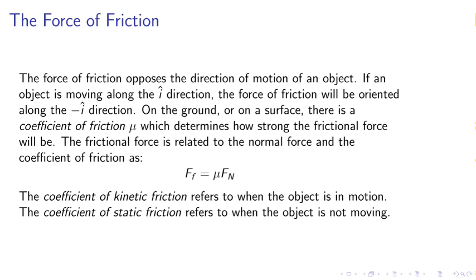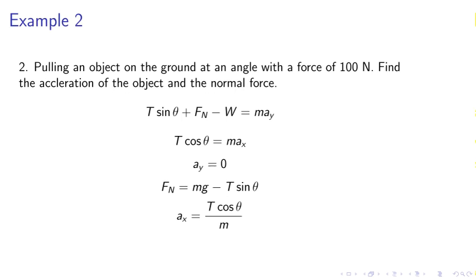The force of friction. The force of friction opposes the direction of motion of an object. If an object is moving along the i hat direction, the force of friction will be oriented along the negative i hat direction. On the ground or on a surface, there is a coefficient of friction mu which determines how strong the frictional force will be. The frictional force is related to the normal force and the coefficient of friction as Ff equals mu Fn. The coefficient of kinetic friction refers to when an object is in motion.